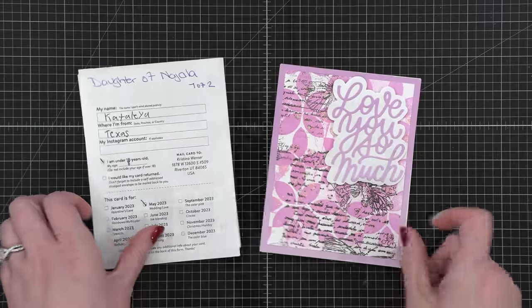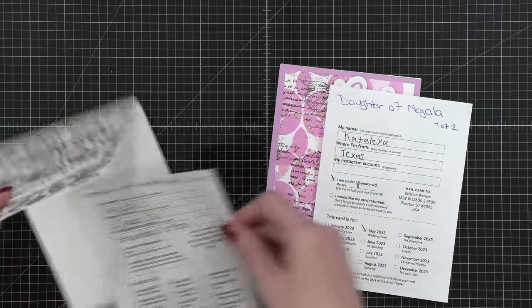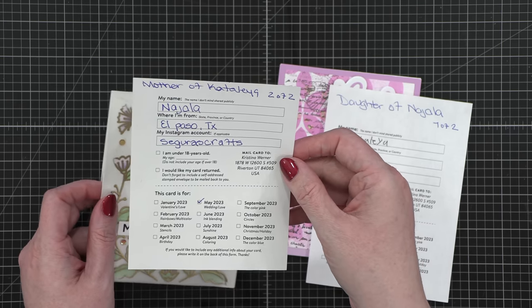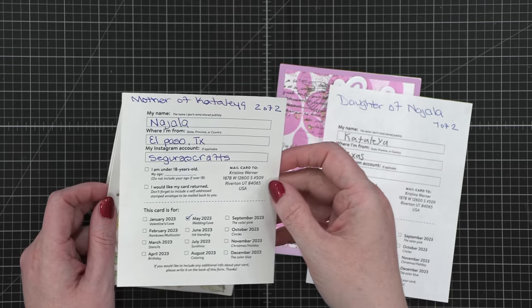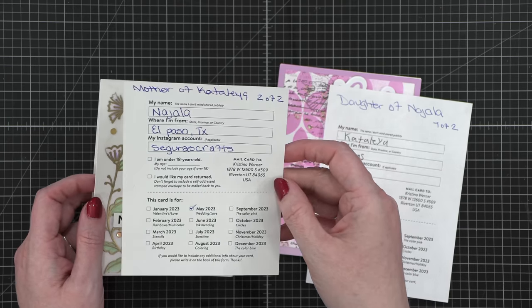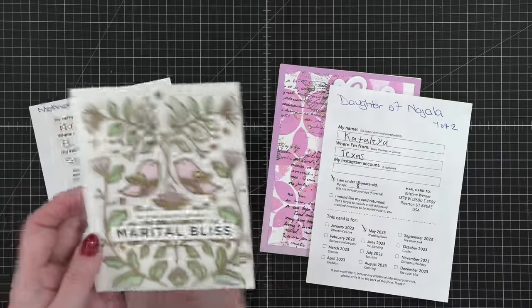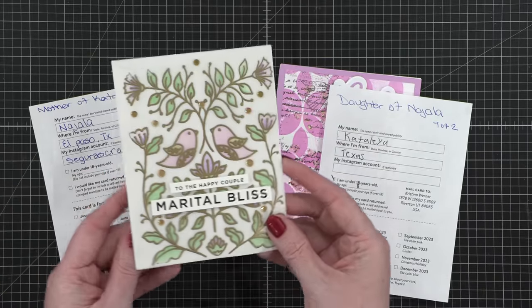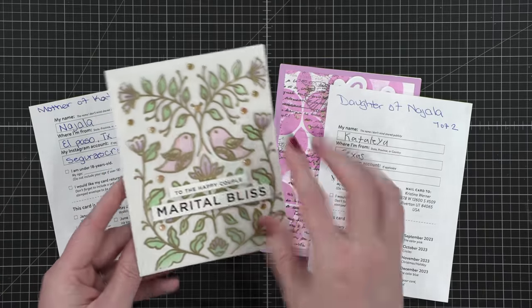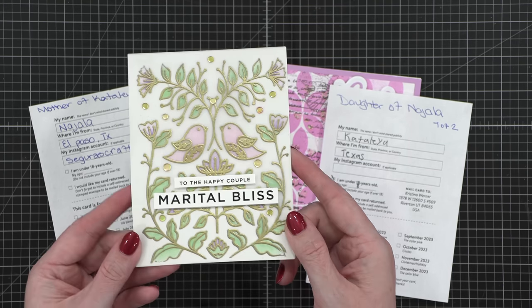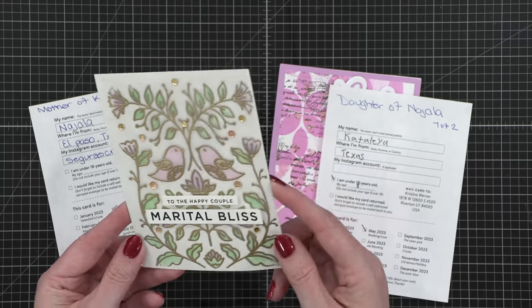And then her mother, I'm so sorry. I'm not saying your names correctly. Does sound like a very beautiful name though. She sent this one along. These are both for the month of May. And I really love this one. It has a vellum covering. It looks like she made colored vellum on the backside. Such a pretty soft wedding card. So beautiful.